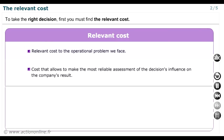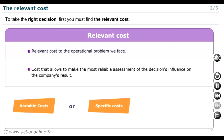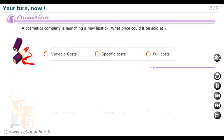The relevant cost is the cost that enables us to make the most reliable assessment possible of the influence that the decision to be taken may have on the company's results. According to the circumstances, the relevant cost may be the variable cost, the specific cost, or the full cost.